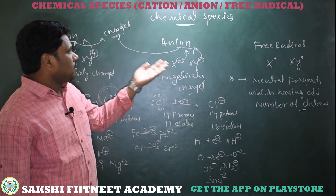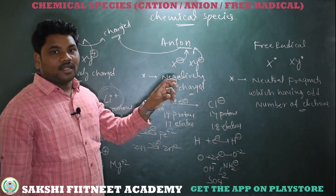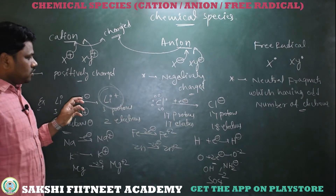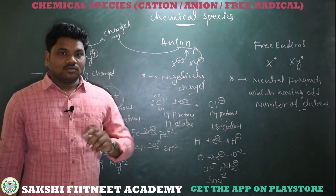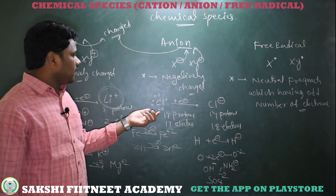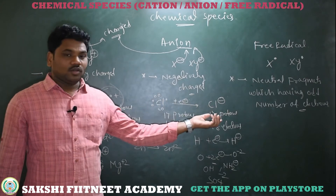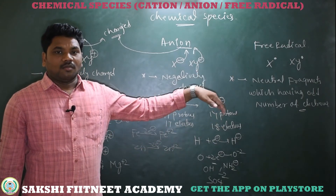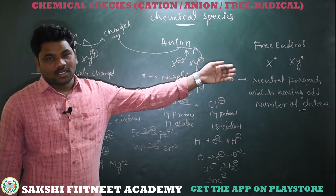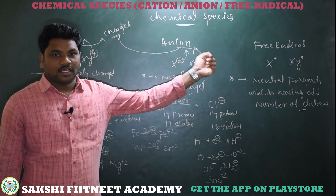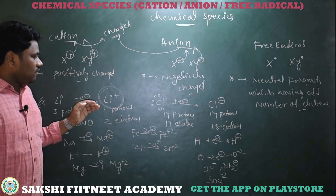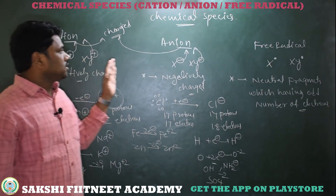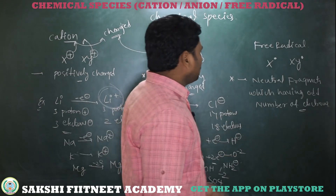Anion means: on gain of electron, the neutral atom converts into negative charge. On loss of electron, the neutral atom converts into positive charge. Negative charge means excess of electrons — number of excess electrons equals number of negative charges. Number of excess protons equals number of positive charges. These are called cations and anions.